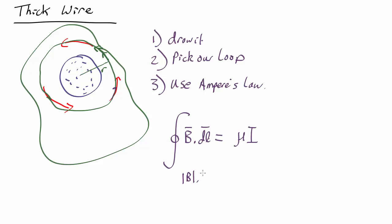that gives you the size of a circle, which is just circumference 2 pi r equals mu, which should be mu nought i.